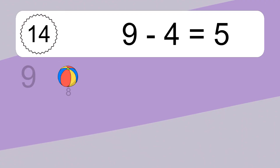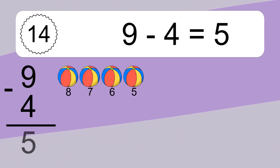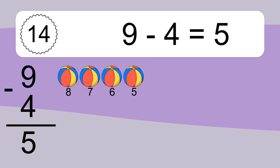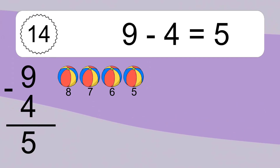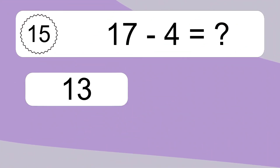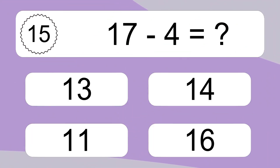9 minus 4 equals what? 9 minus 4 equals 5. Let's count it: 8, 7, 6, 5.